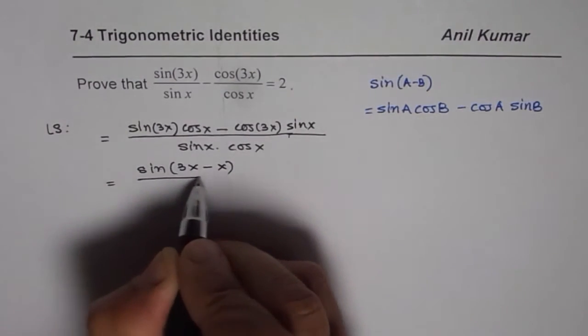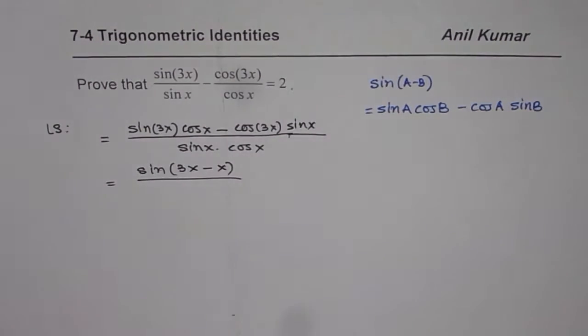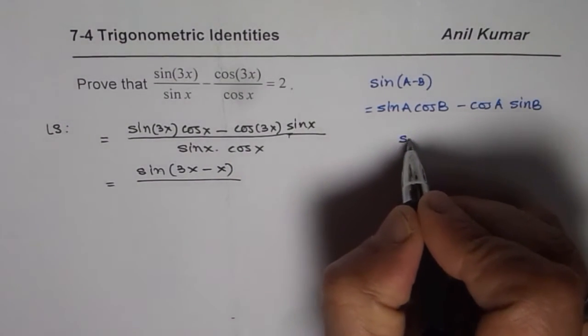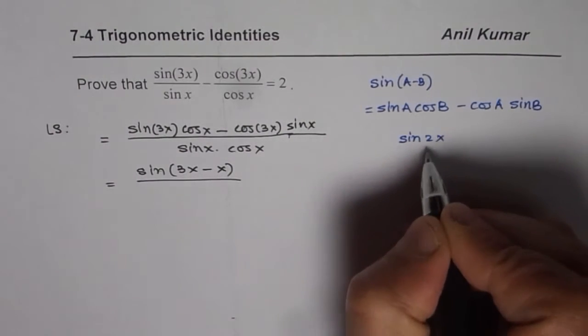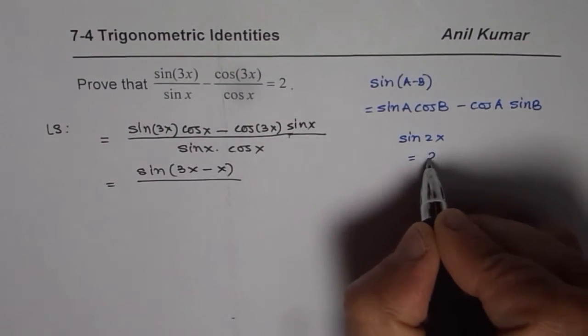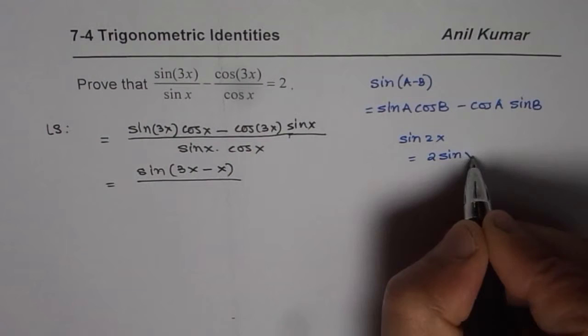Now, the denominator is sin(x)cos(x). Does that remind you of anything? What is sin(2x)? Sin(2x) is 2sin(x)cos(x), correct?